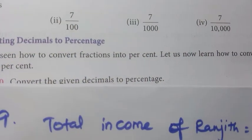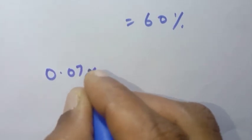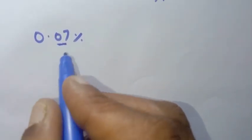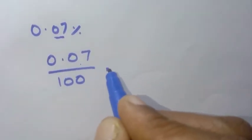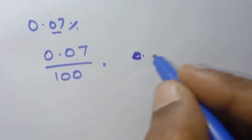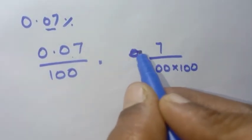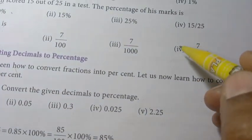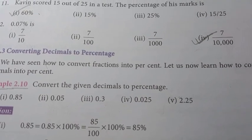12th question: The answer is 0.07 percent. How do we convert 0.07 percent to a fraction? Divide by 100. So 0.07 by 100. Remove the decimal: 7 by 100 into 100, giving 7 by 10,000. The 4th option is the right answer. Exercise 2.1 is over. In the next video we will do Exercise 2.2. Thank you for your support, thanks for watching.